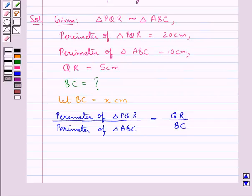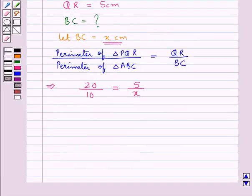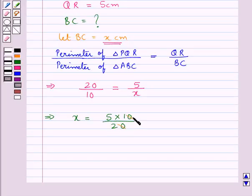The perimeter of triangle PQR is 20 cm, so 20 upon 10 is equal to 5 upon x. From here, x is equal to 5 multiplied by 10 upon 20. The zeros cancel, giving x equal to 5 upon 2, which is 2.5 cm.